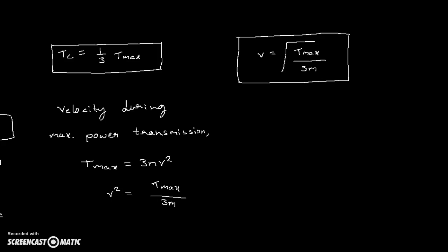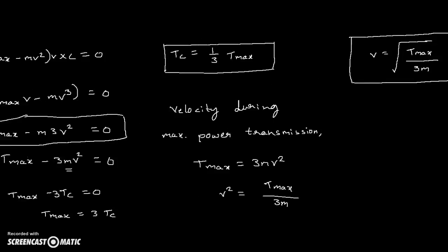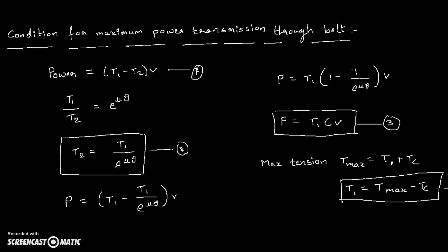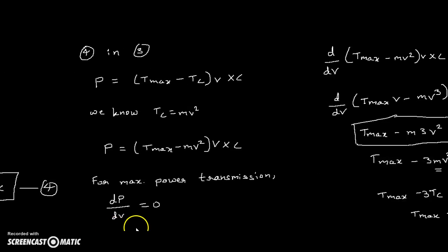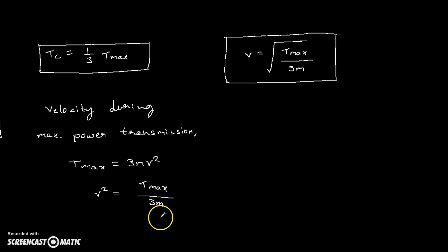So these are the two key results: T_max = 3Tc is the condition relating centrifugal tension and maximum tension during maximum power transmission, and v = √(T_max / 3m) is the velocity maintained by the belt during that condition. By knowing the power transmission formula, the ratio of two tensions, and the centrifugal tension formula, we can derive these equations easily. I hope you understand — please feel free to comment if you have any doubts. Thanks for watching.